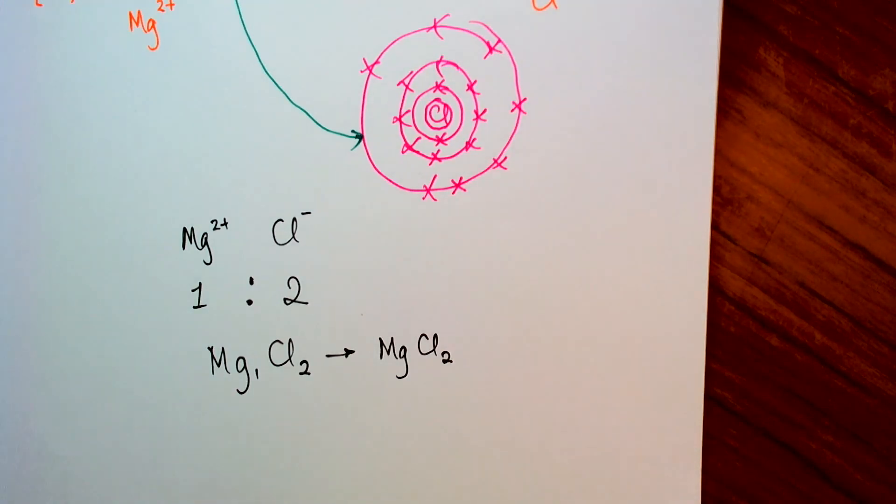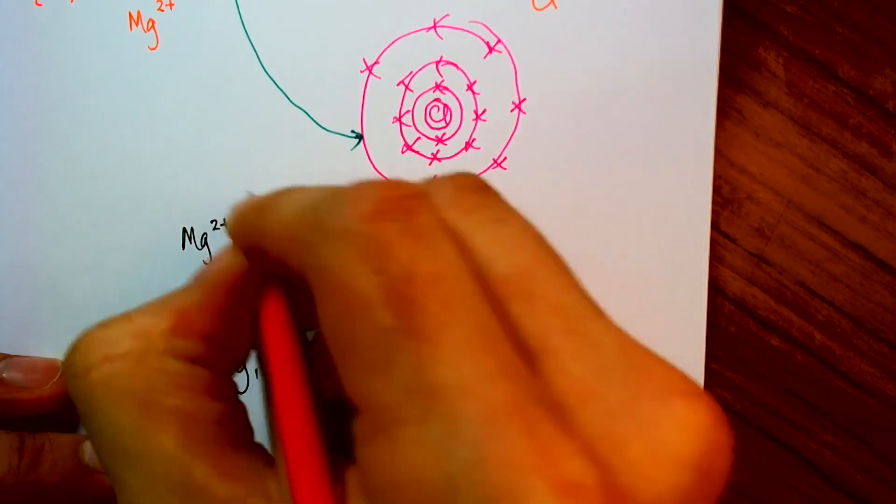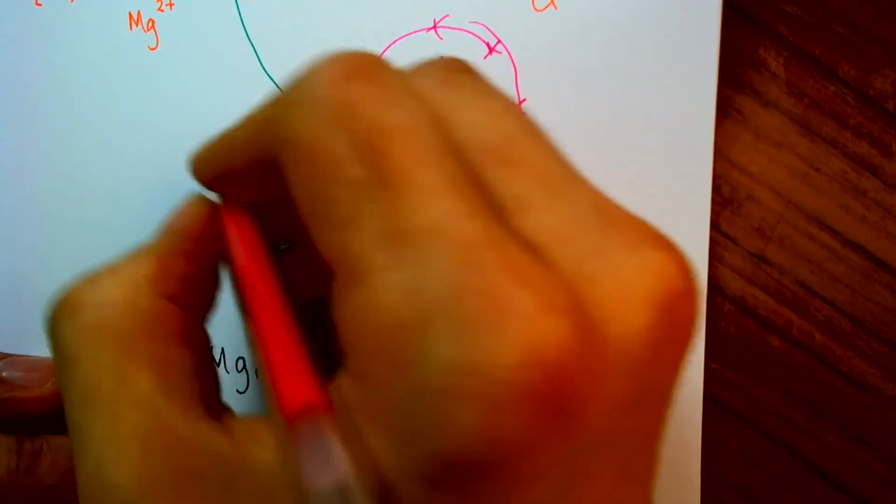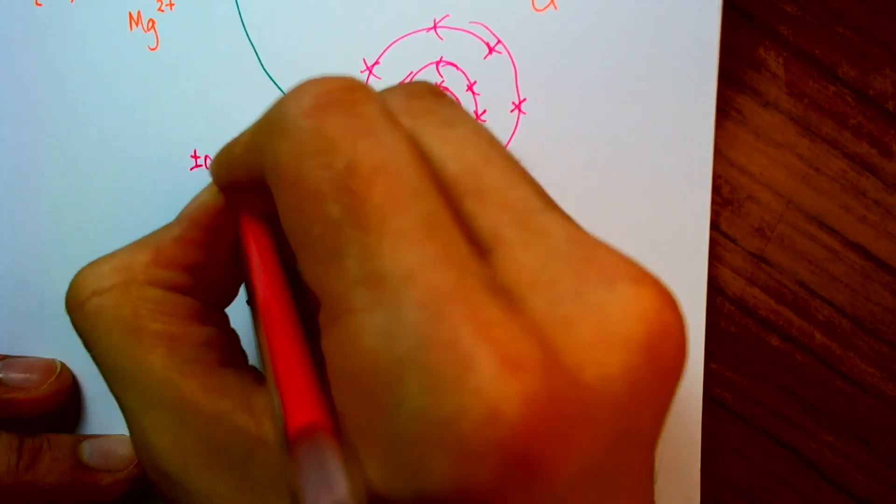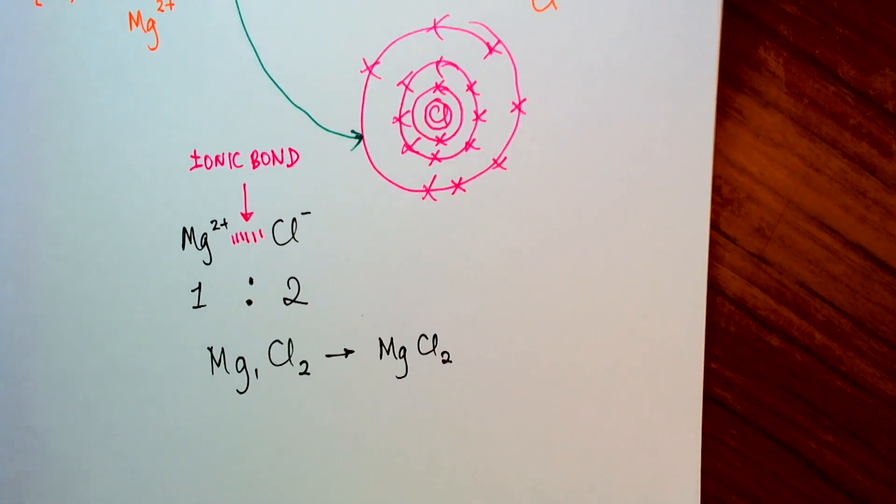So the structure of magnesium chloride would just be alternating plus and minus charges because these plus and minuses form an attraction, an electrostatic attraction, hence an ionic bond between them. So we have a large, gigantic, three-dimensional structure. But this time, if I were to count up the number of magnesium ions in it, I would find that they would be half the number of chlorine ions because there are twice as many chlorine ions as there are magnesium ions.